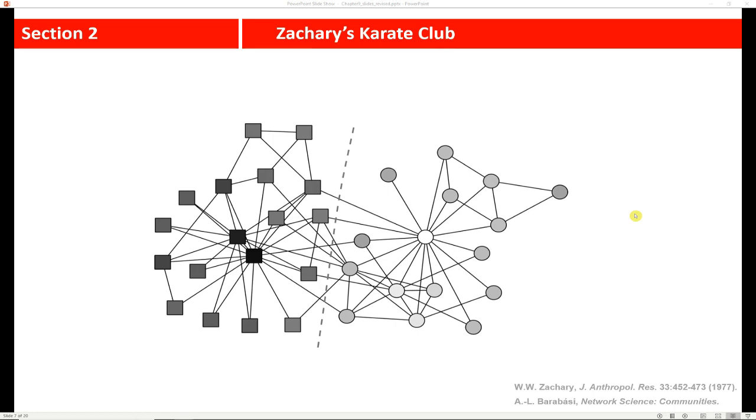But the basic idea is that there was a conflict among the members of the club. And that conflict resulted eventually in a split of the club. And so what Zachary discovered was he could make some kind of predictions using network theory about who would end up in which community after the split.